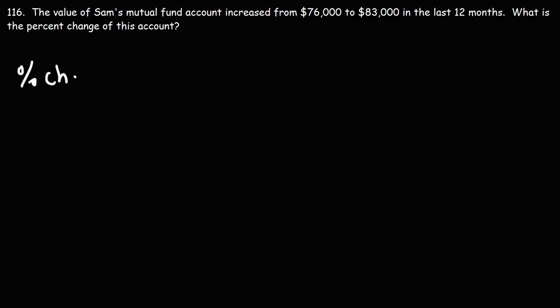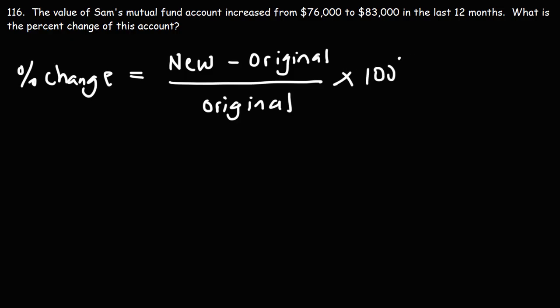So to calculate percent change, it's equal to the new price minus the original price divided by the original price times 100%.